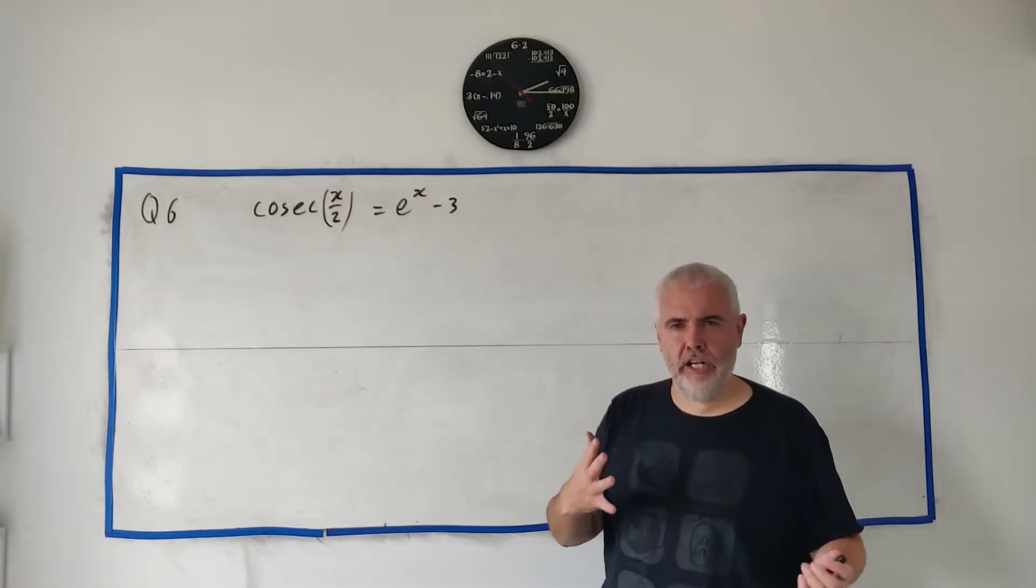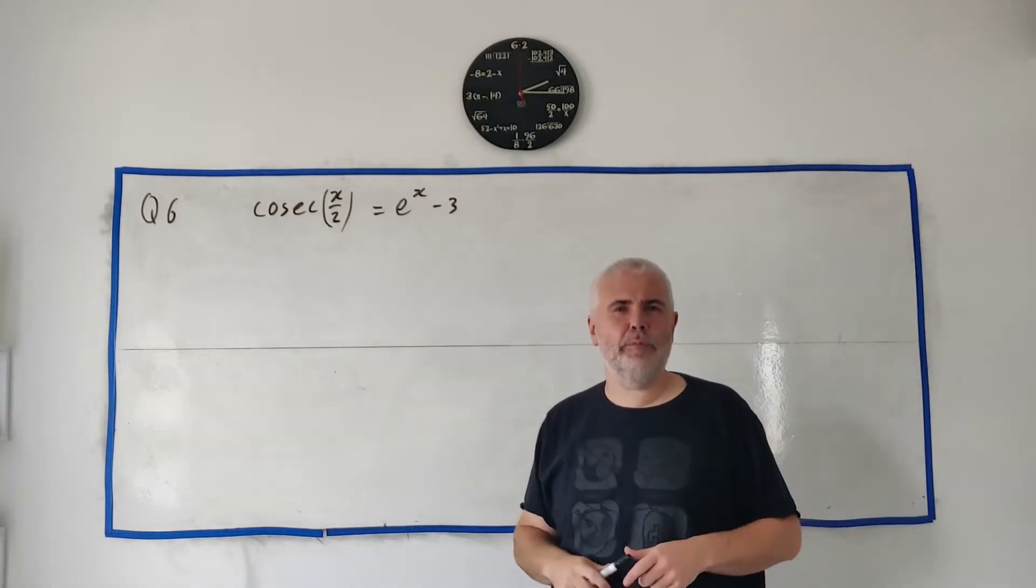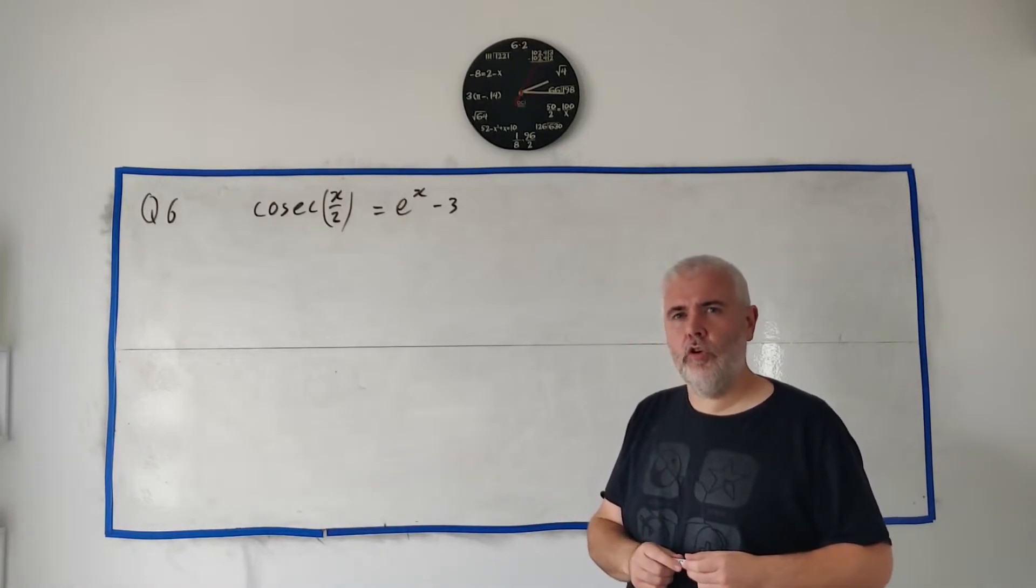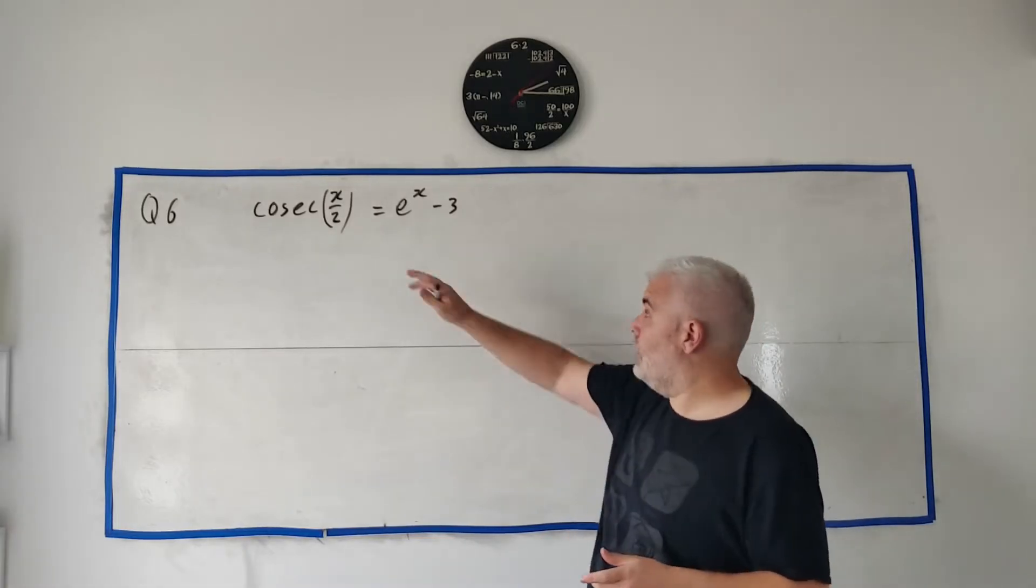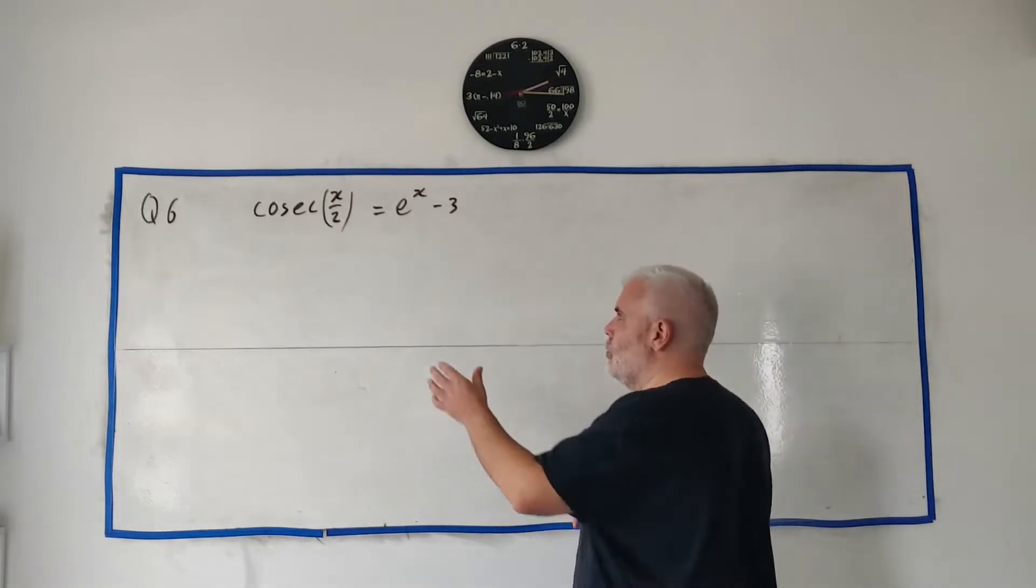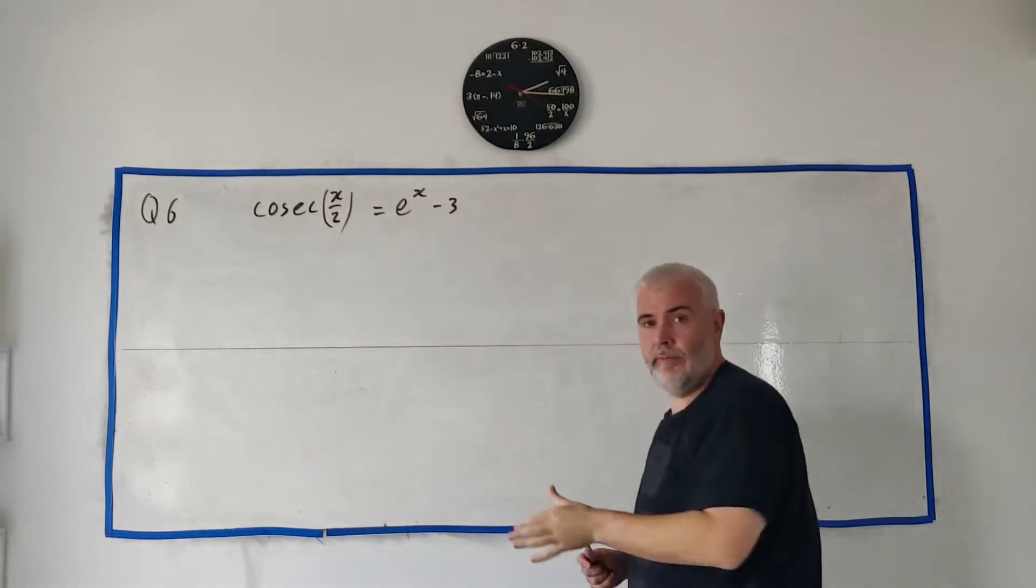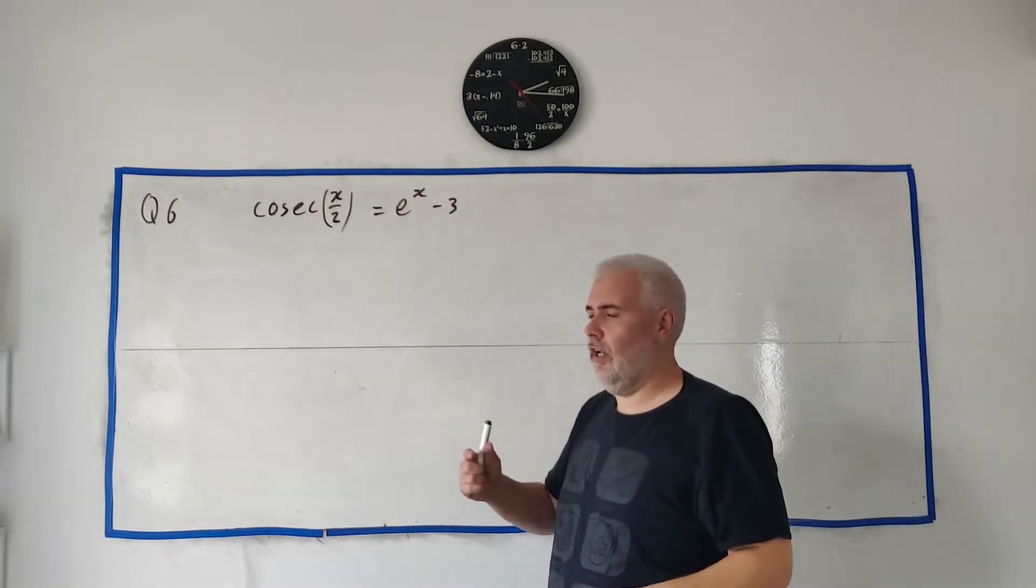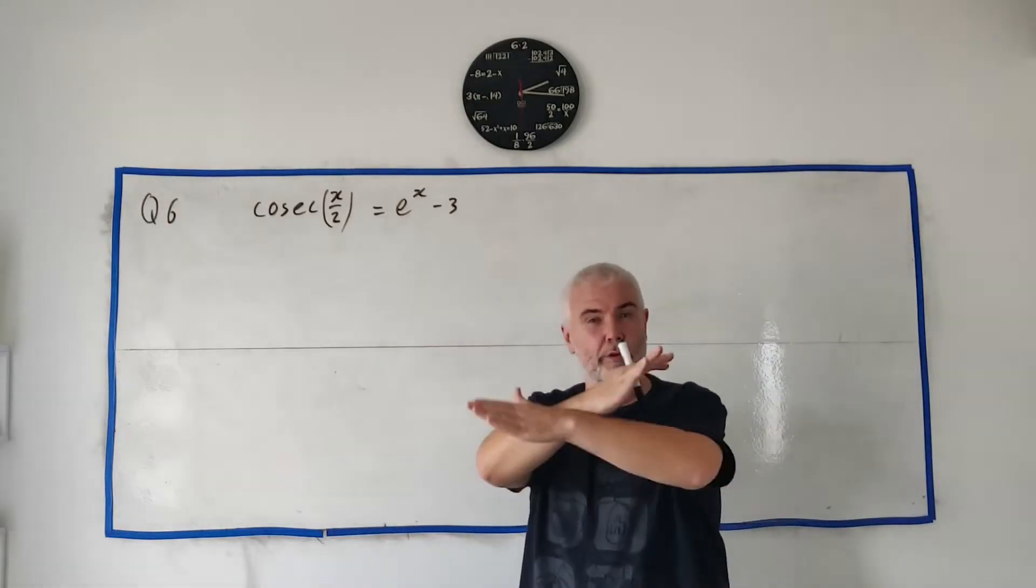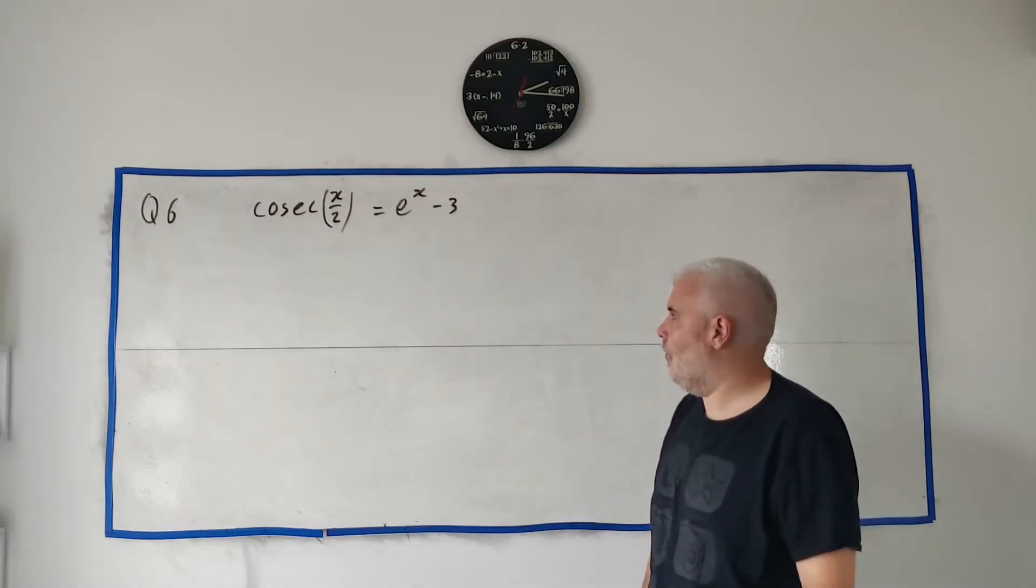Question 6 is a fairly long question, all revolving around this equation here. But they split it up into multiple parts to hopefully make it a little easier for us. Part A asks us to draw a graph or two graphs to show that this equation has exactly one root. Now what that means is they want us to draw this function on the left, and they want us to draw this function on the right. If they equal each other, if they have exactly one root, they'll equal each other exactly once. Or we'll get some sort of drawing where they cross one time. So that's what we'll do.